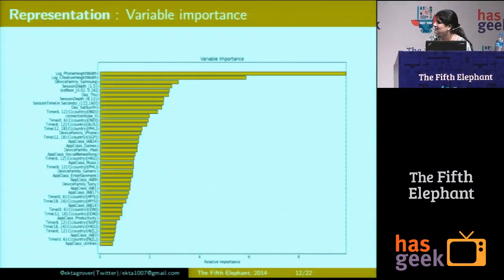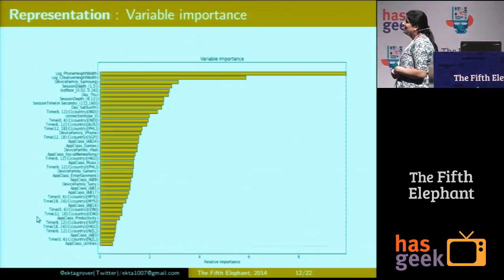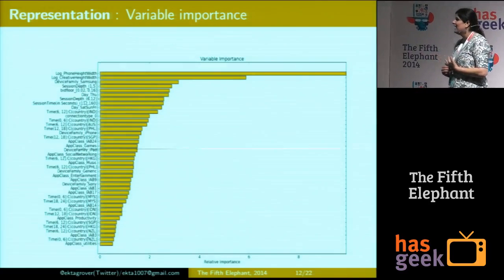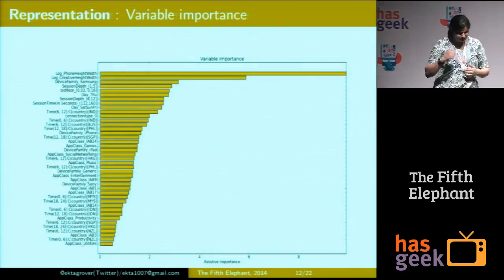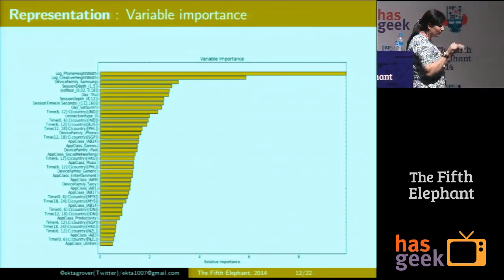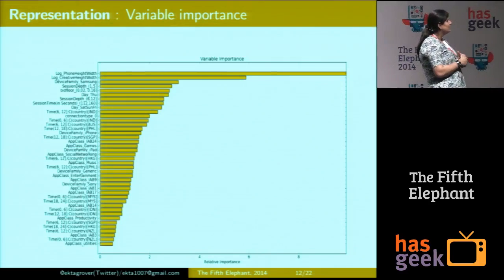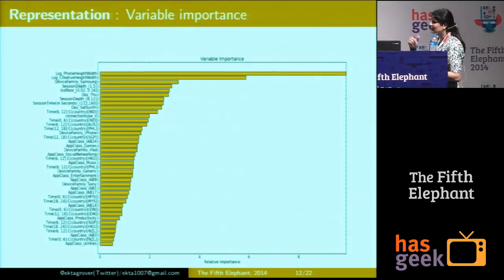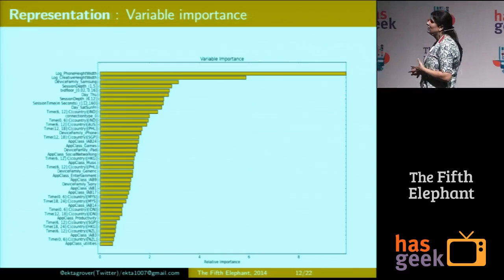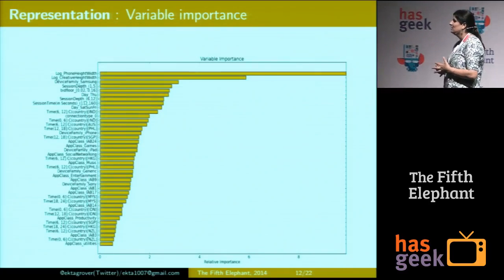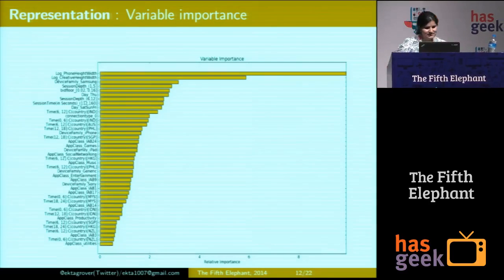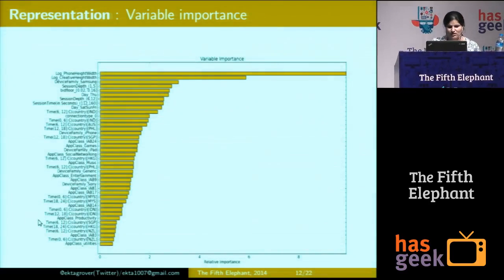In terms of variable importance — the phone stood out by far in terms of its impact, along with creative height and width. An easy way to see the creative height and width is: what fraction of my phone dimensions does the creative take up? We also had other signals — interaction effects of time with respect to country, because we were logging everything in one time zone and wanted to bring the country time zone effect into play — plus app classes and other signals like session depth.